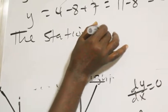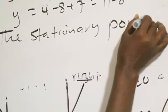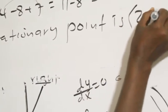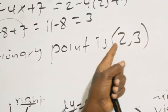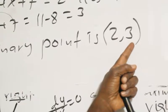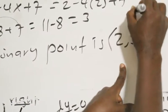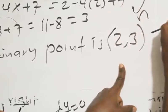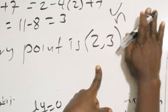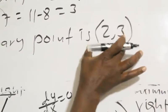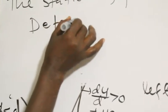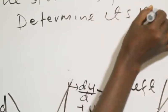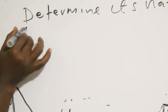So the stationary point is at (2, 3). This is the stationary point on the curve. To determine its nature, we check the sign of the derivative to the left and right of x equals 2, or use the second derivative test.